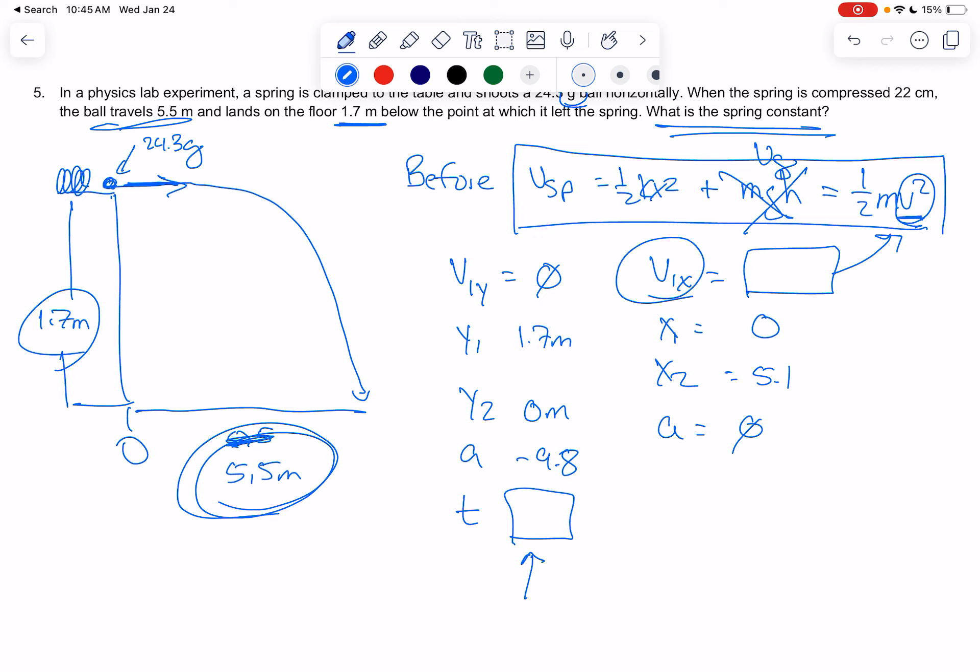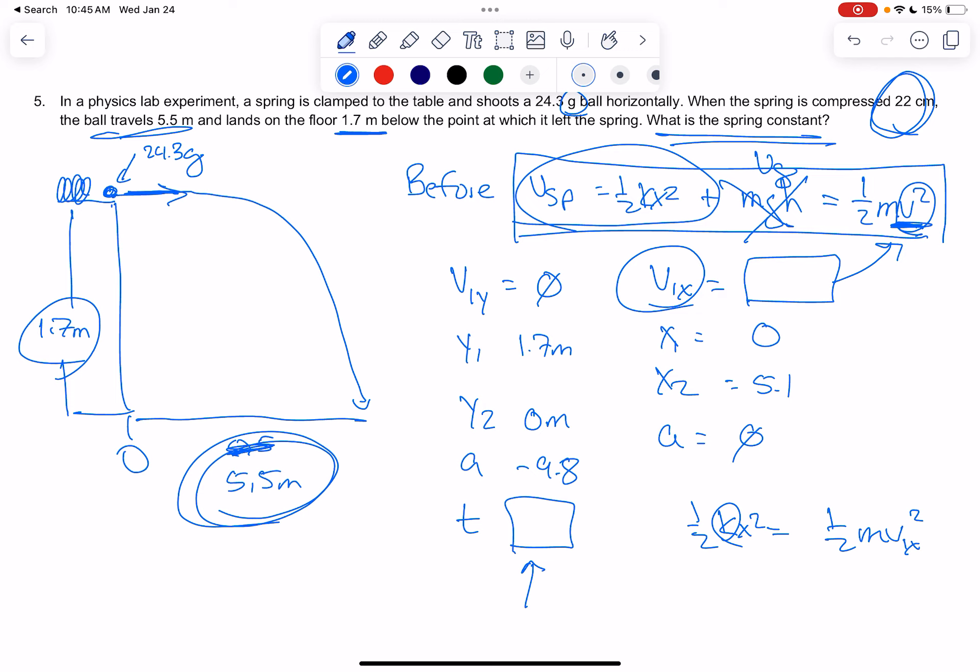So plug it into kinematics equations, and then you can find V1X. And when you plug it into V1X, that gives you the V1X right here. And then you can set it, so then you'll have 1/2 KX squared equals 1/2 MV1X squared. You're solving for, I believe it was K because you know X. It gave us the, it was compressed 22 centimeters. Watch that, that's 22 centimeters. You'll have to convert to meters, and you can solve the problem.